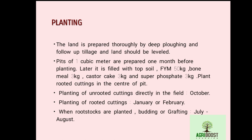Planting of rooted cuttings should be done in January or February, whereas planting of unrooted cuttings should be done directly in the field in October. When rootstocks are planted and budding or grafting is done, it should be carried out in July or August. The popular grafting method used in grape for rootstock development is wedge grafting.